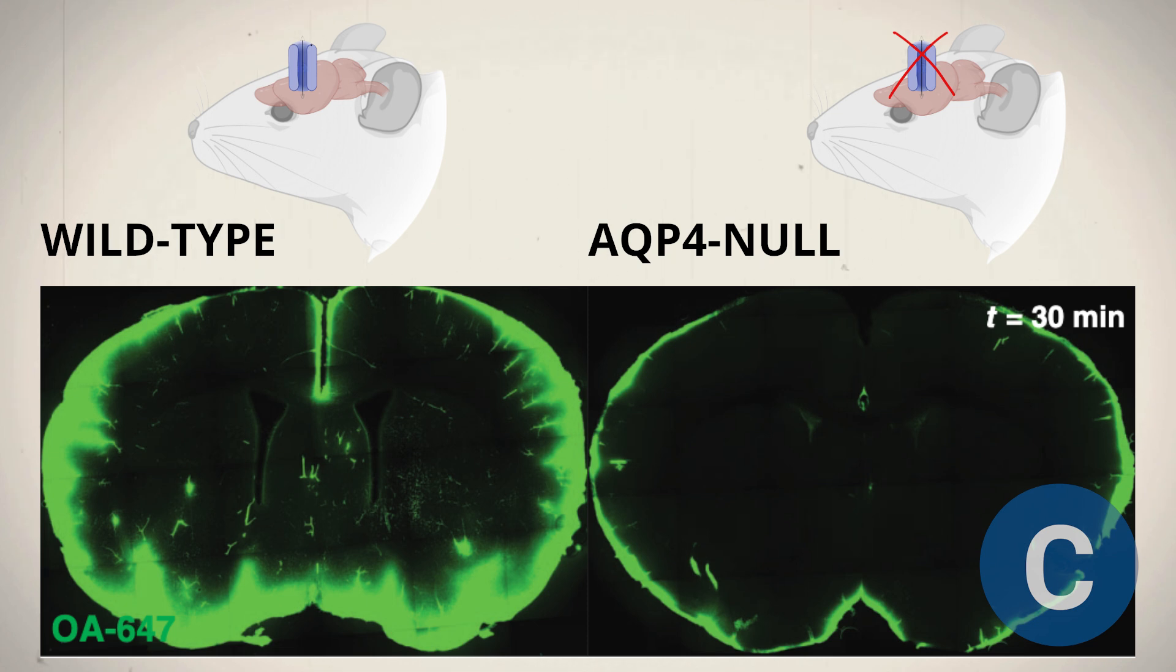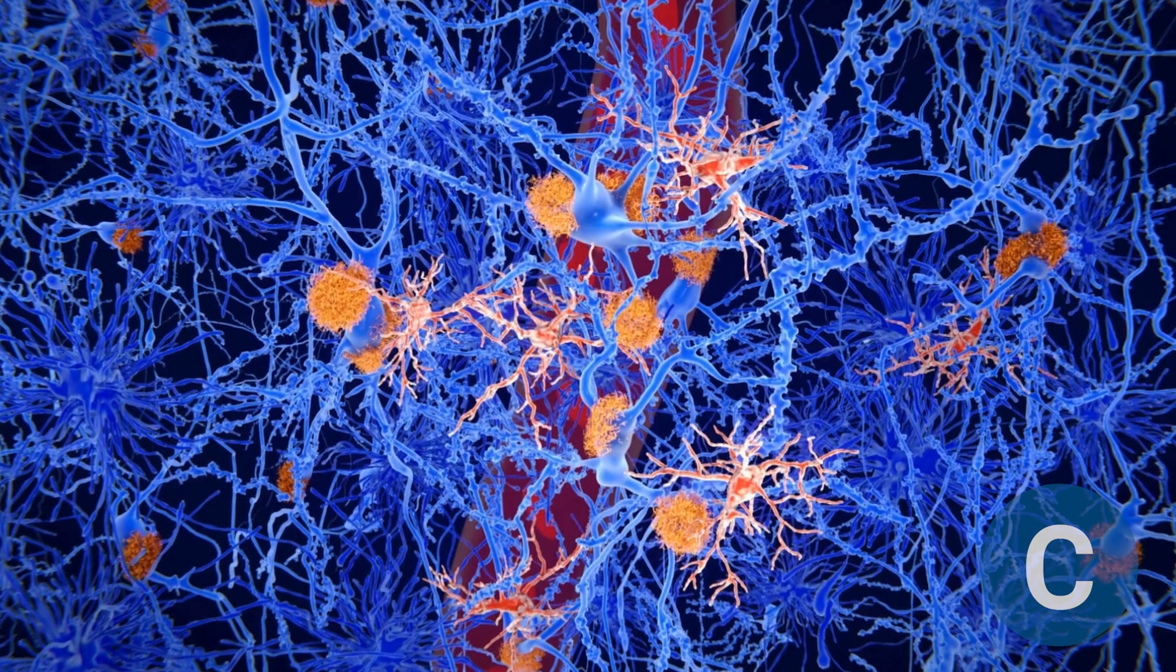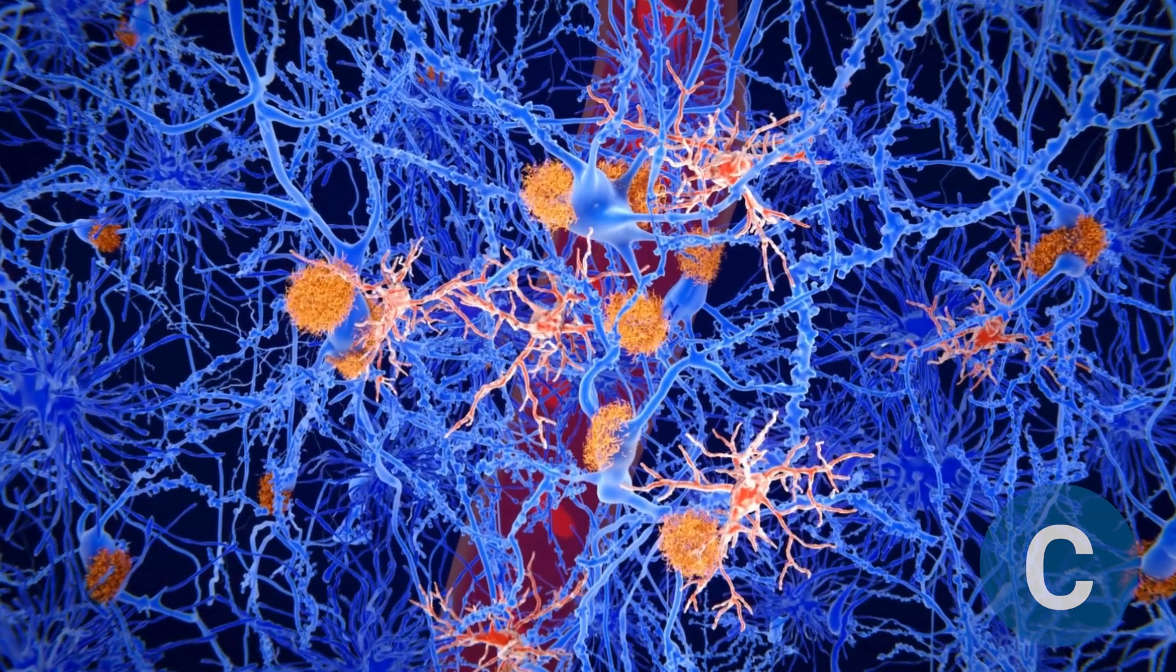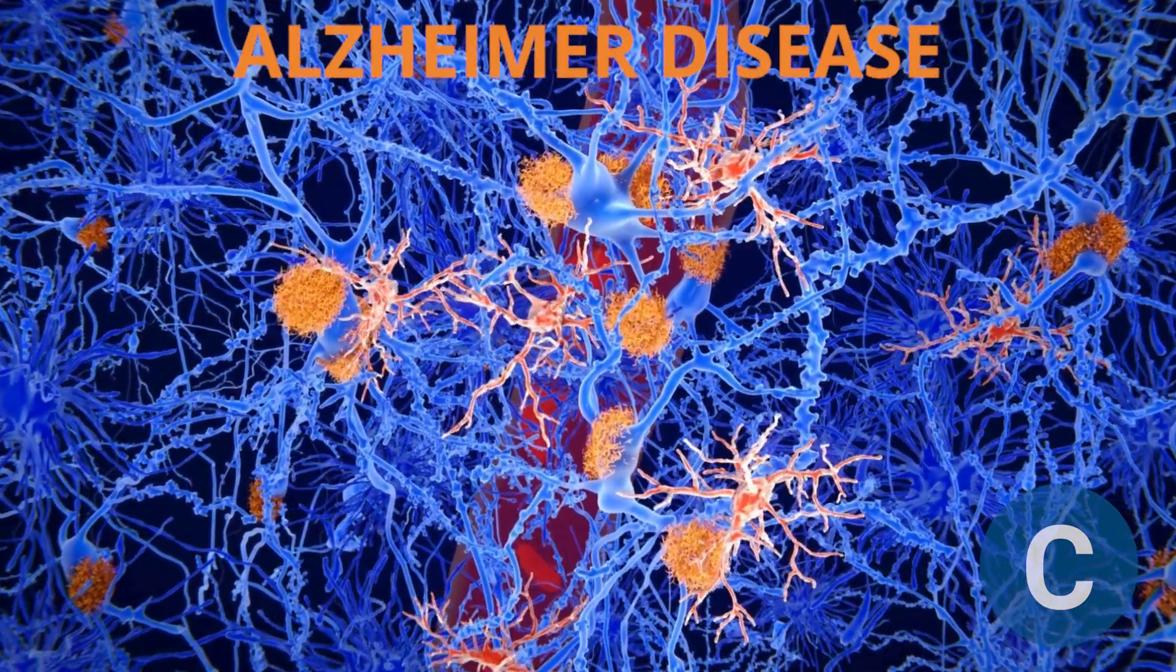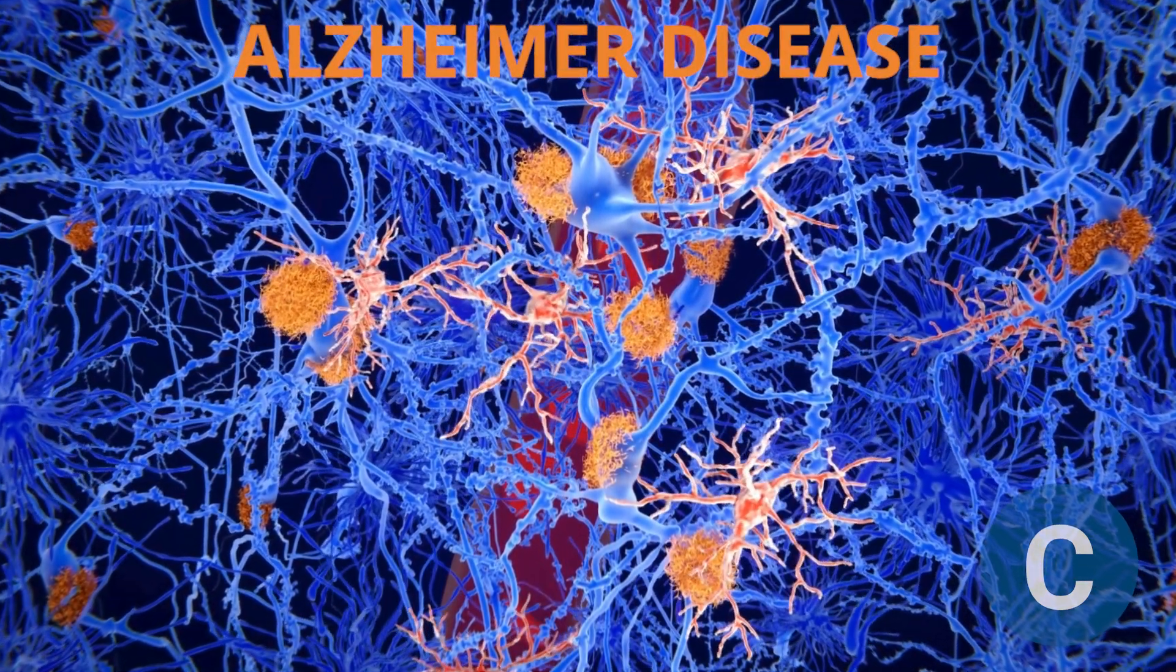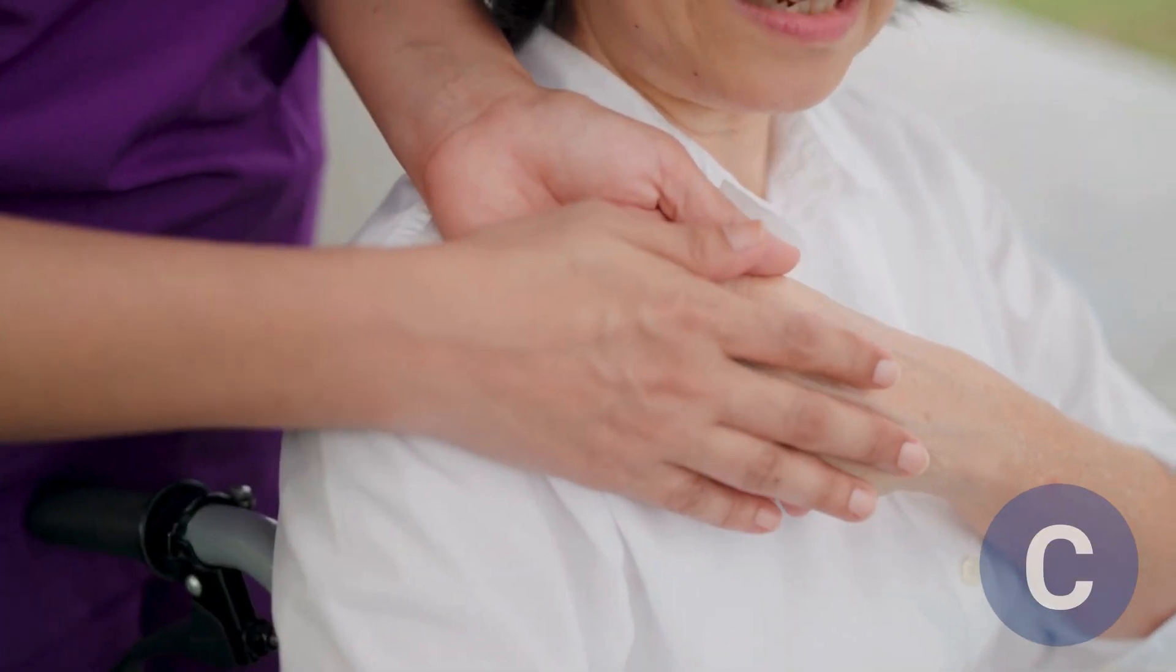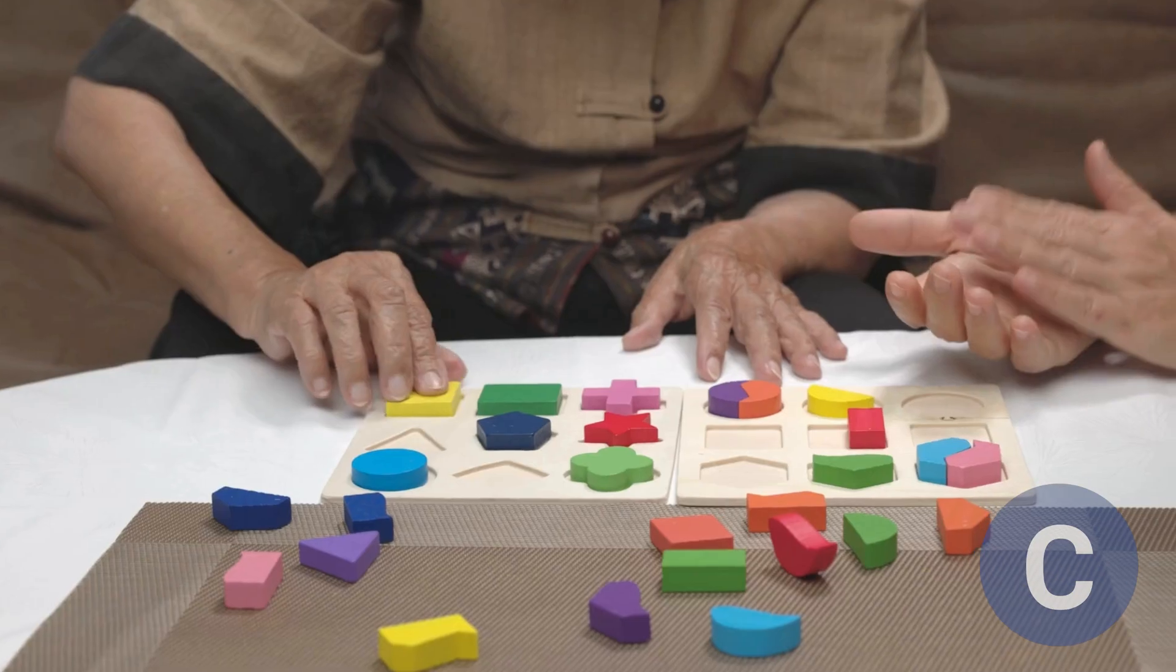This result highlights the importance of aquaporin-4 in distributing cerebrospinal fluid throughout the brain. A clear example of how the brain's inability to clear waste can have serious effects is Alzheimer's disease. This is one of the most common and debilitating neurodegenerative diseases today.